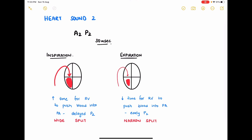During inspiration the venous return to the right heart increases and thus there is greater amount of blood in the right ventricle. Now that there is more blood in the right ventricle it takes a little longer time to push this blood into the pulmonary artery and thus the pulmonic valves close a little later. So there is a delayed P2 and a wider split of the second heart sound during inspiration.